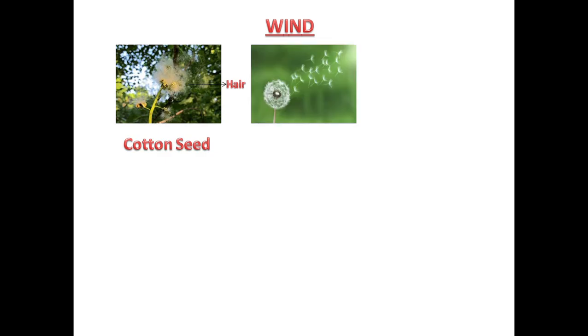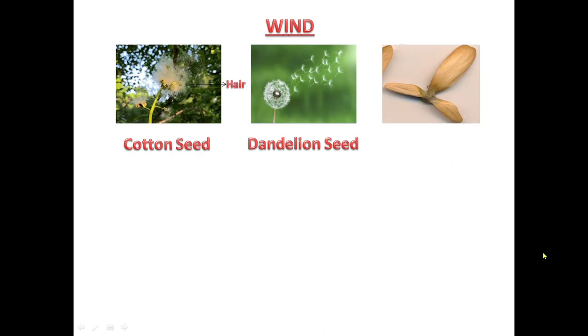Seeds dispersed by wind include cotton seed, dandelion seed, and hyptis seed. You can see their hairs and wings. The hairs and wings of these seeds help in their dispersal by wind.